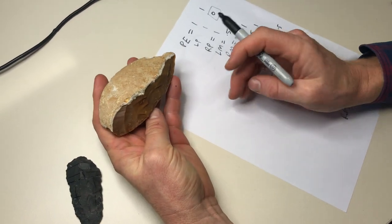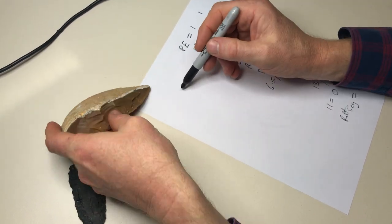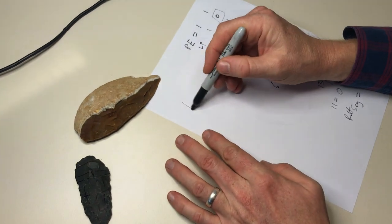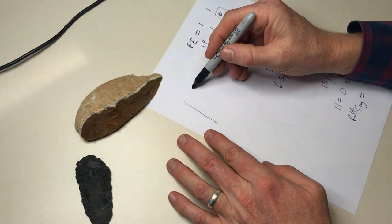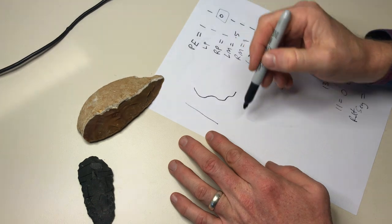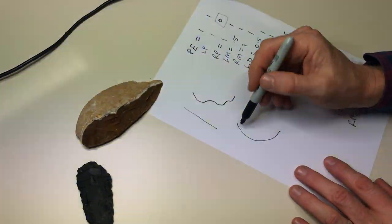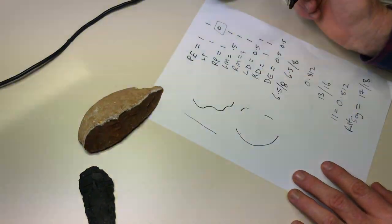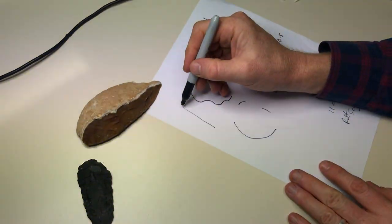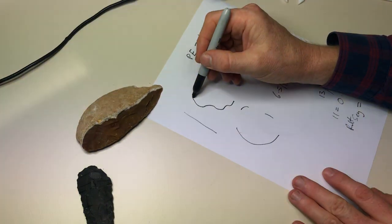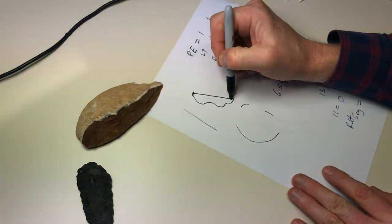There is another one on the end that you might want to include, and that's our retouch curvature. So we can think about retouch as being straight, it can have curves like so, or it can be a simple curved edge, and it can also occur in multiple different patches on a flake.